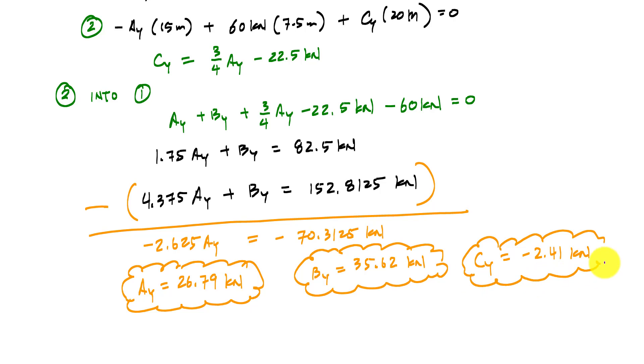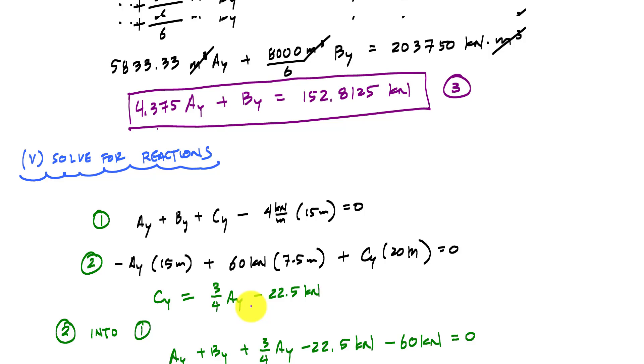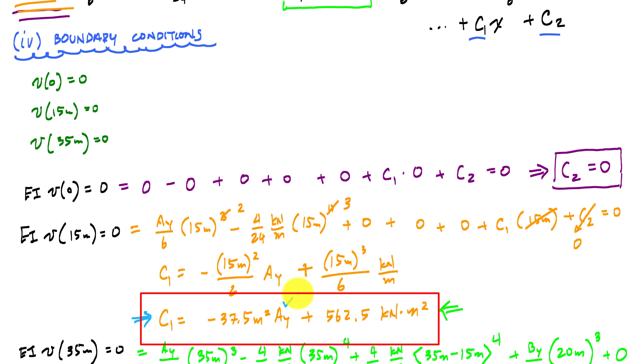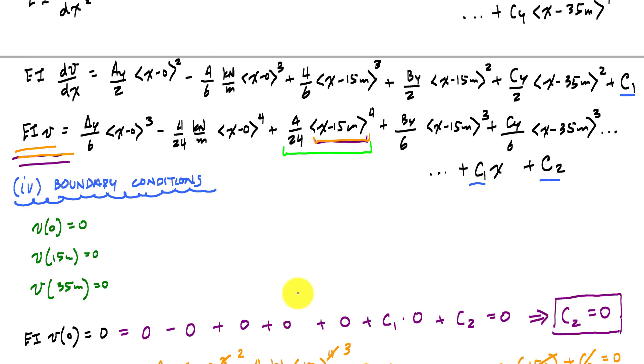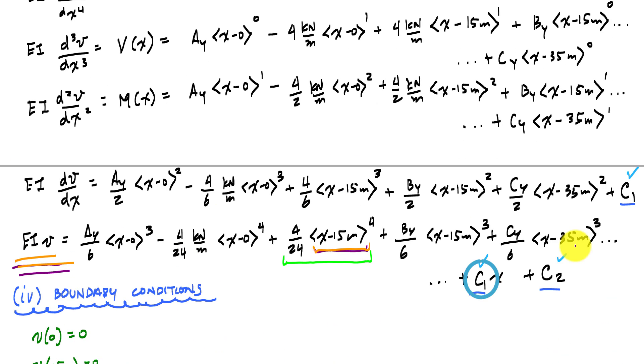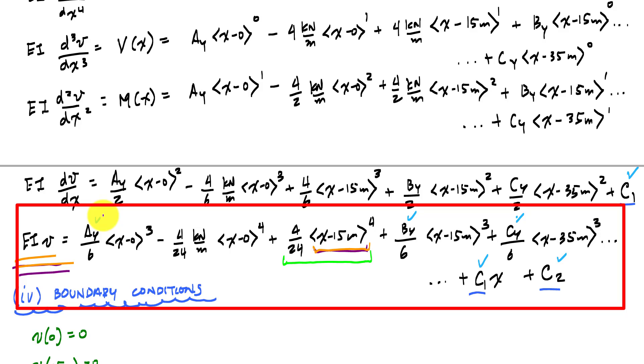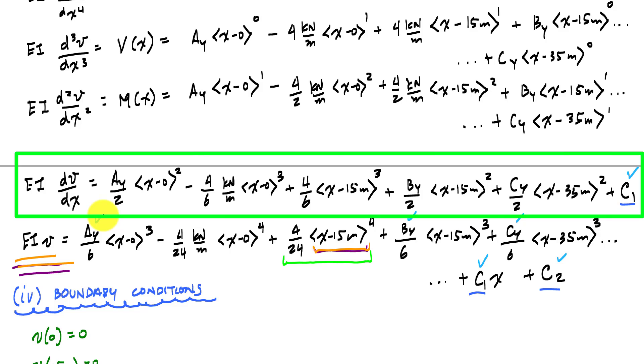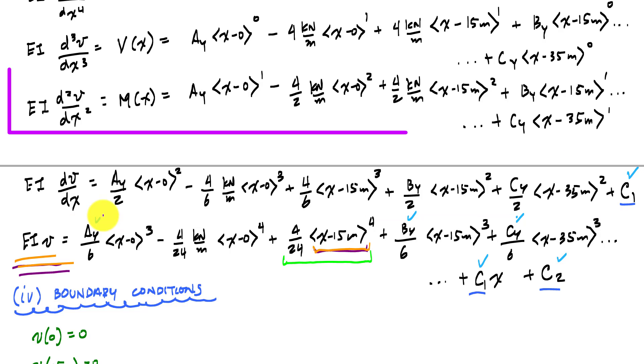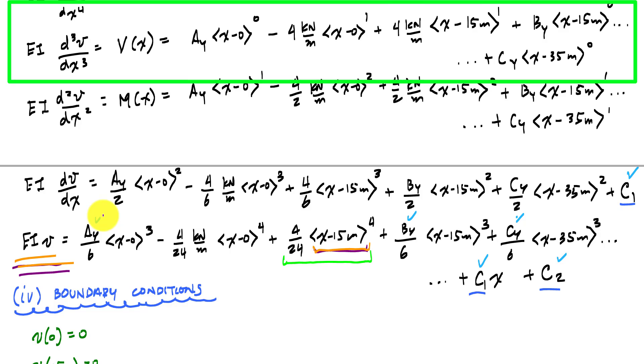And these are my support reactions. And if I take all these values and I go all the way back, if I come back and I plug in for Ay, I get a value for C1. And if I have a value for C1 and I know that C2 is zero and I know Cy, I know By, Ay. Then I have an equation for the display shape of the entire beam. And because I know all the support reactions, shoot, I've even got an equation for the slope. I've got an equation for the moment function. I've got an equation for the shear function all from doing my analysis.